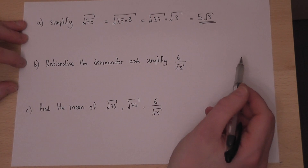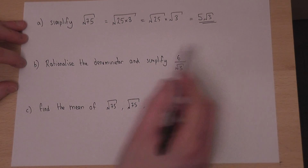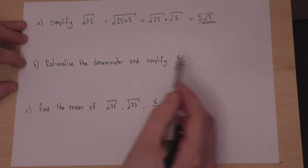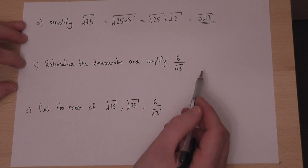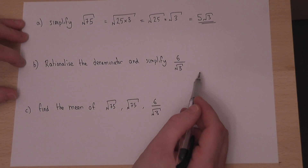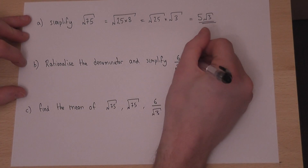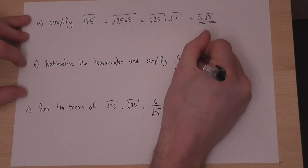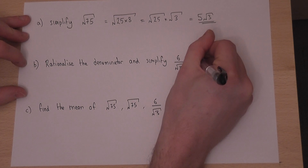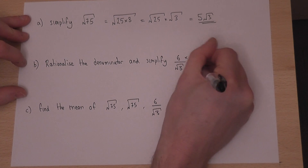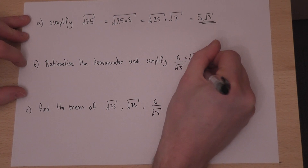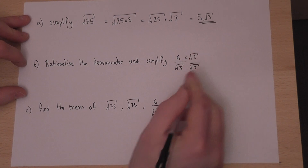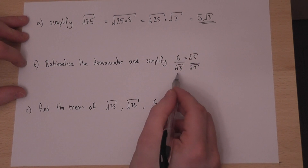The second part asks to rationalise the denominator. To do this we multiply the top and the bottom by root 3, which is the surd at the bottom of the fraction.